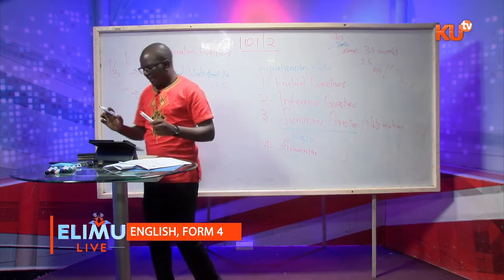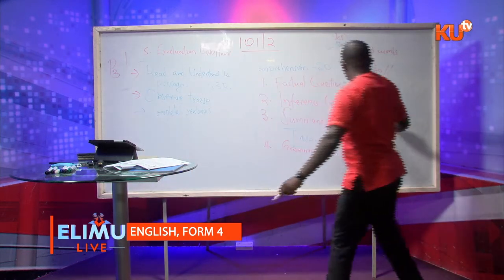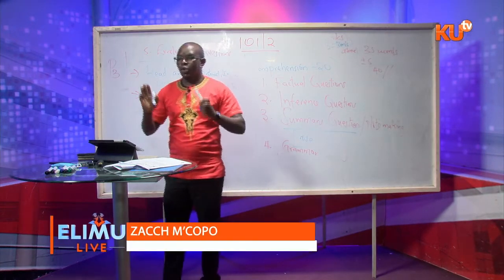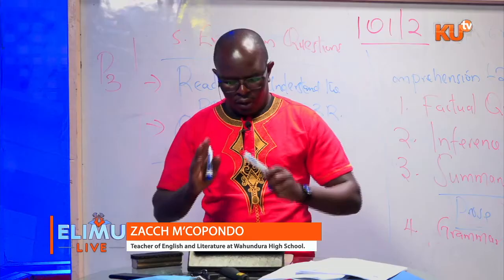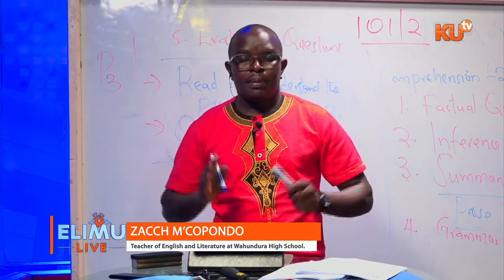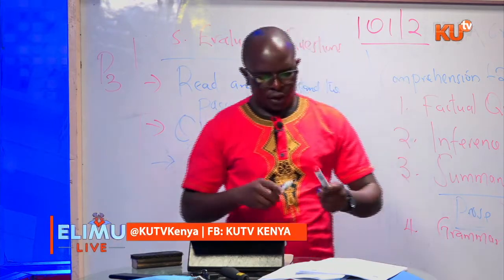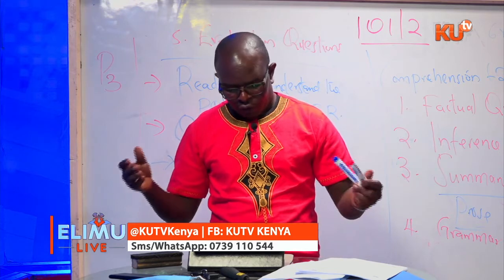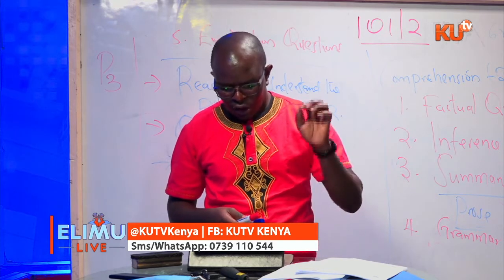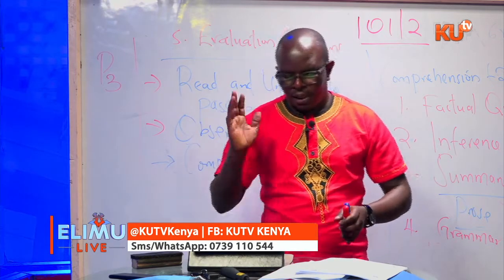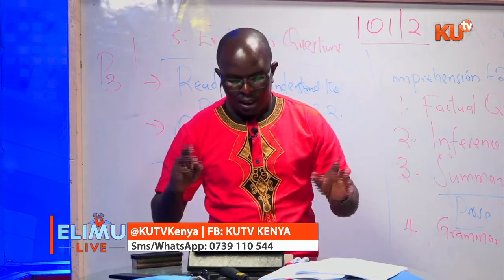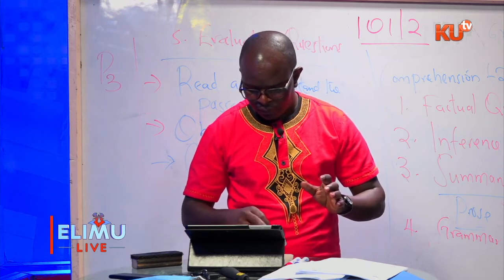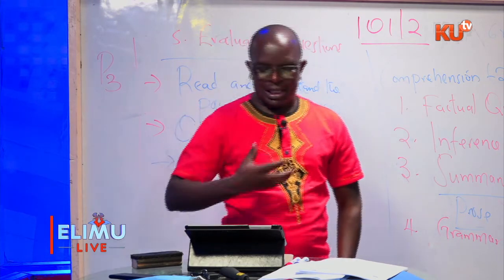Questions on note-making must be in point form. If you're doing note-making, you must write in note form. Summary writing must be done in continuous prose — full, complete sentences beginning with a capital letter and ending in a final punctuation mark. Final punctuation marks can be a question mark, a full stop, or an exclamation mark. For questions on semantics, give the meaning of words using the tense of the word in question. You can also lift answers directly from the passage if you're unsure how to phrase them.